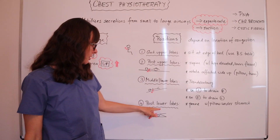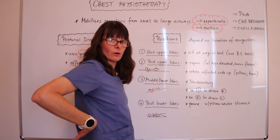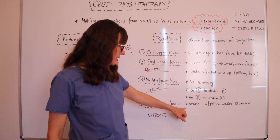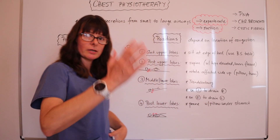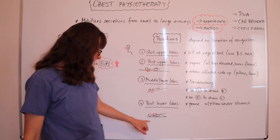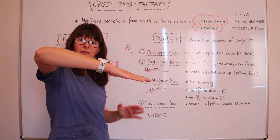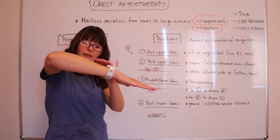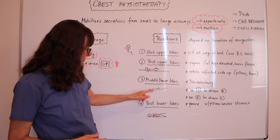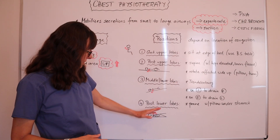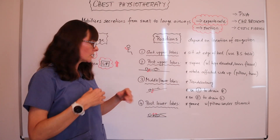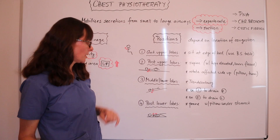If the congestion is in the posterior lower lobes — in the back of the lower lungs — we want to put the patient in a prone position with a pillow underneath their stomach. We place them face down, ask them to turn their head to the side, and with the pillow under their stomach it elevates the hips, allowing those lower lung fields to drain with gravity. Similar to the Trendelenburg position, but because it's in the posterior, being on their stomach helps move secretions from the smaller into the larger airways.